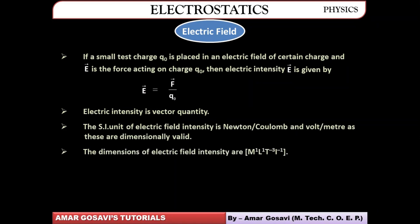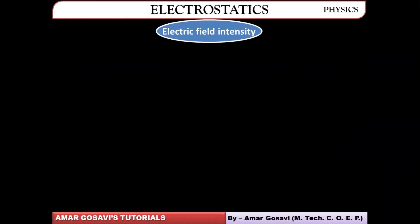The dimensions for electric field intensity are M¹ L¹ T⁻³ I⁻¹, where I is the fundamental quantity called electric current.